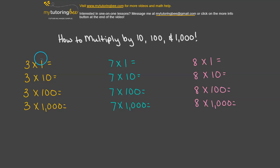So let's look at our first set of problems. Here we have 3 times 1, 3 times 10, 3 times 100, and 3 times 1,000. So the first one should be pretty simple. Anything times 1 is just that same number. So if we have 3 times 1, then that answer will be 3.